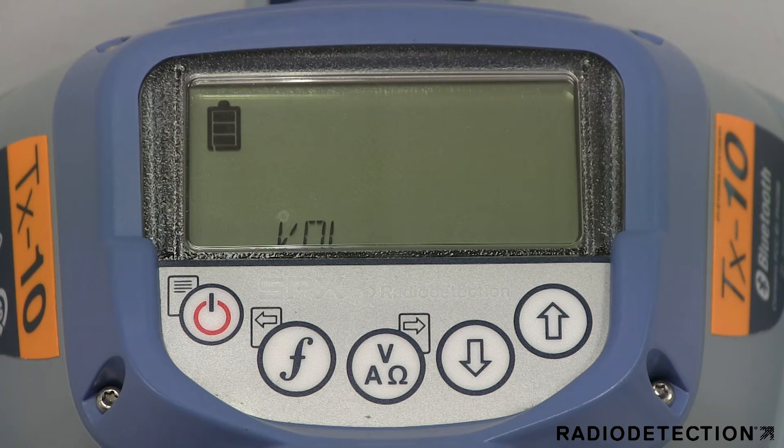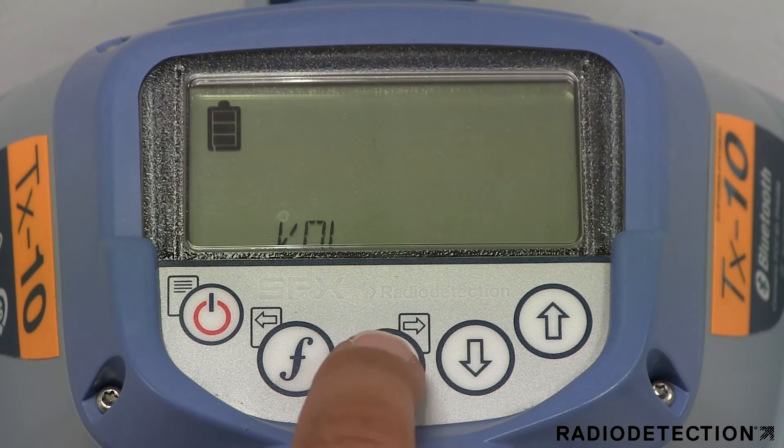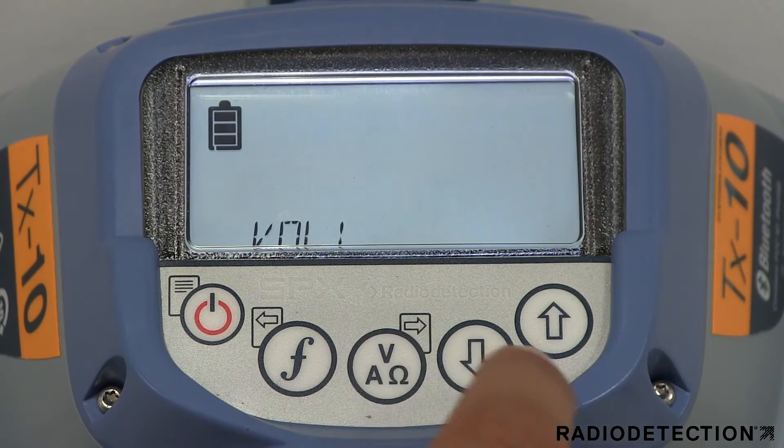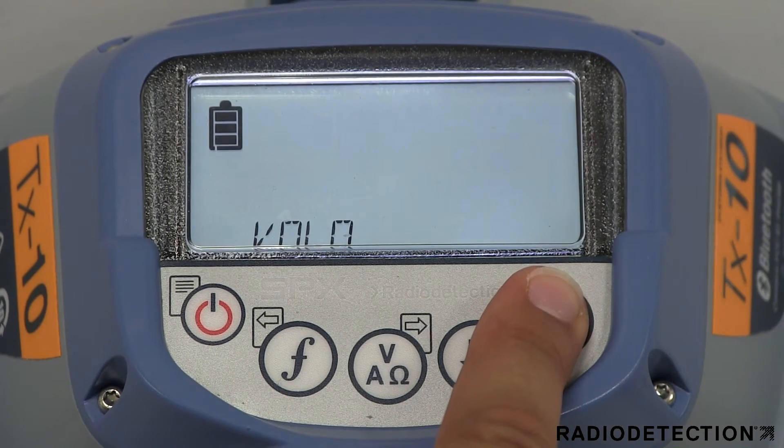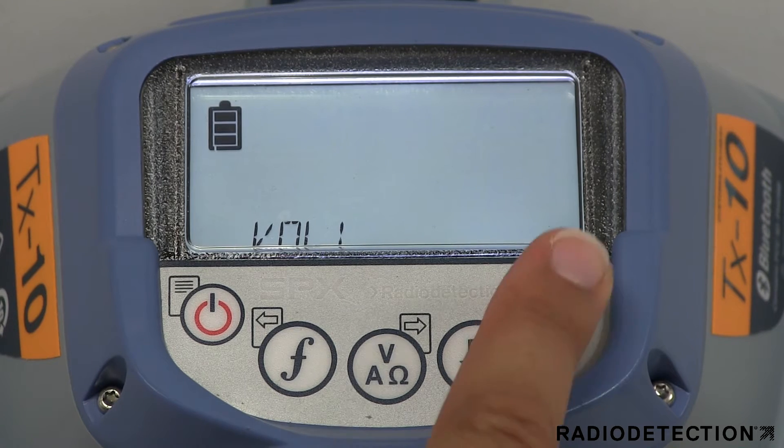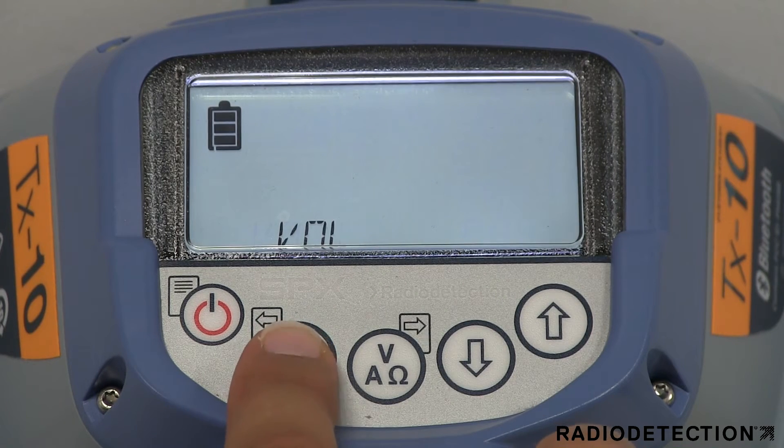To change the output volume of the transmitter, select the volume menu item. To enter the menu item, use the measure key. To change the volume output level, use the up and down keys. Then use the F key to confirm the desired volume output level.